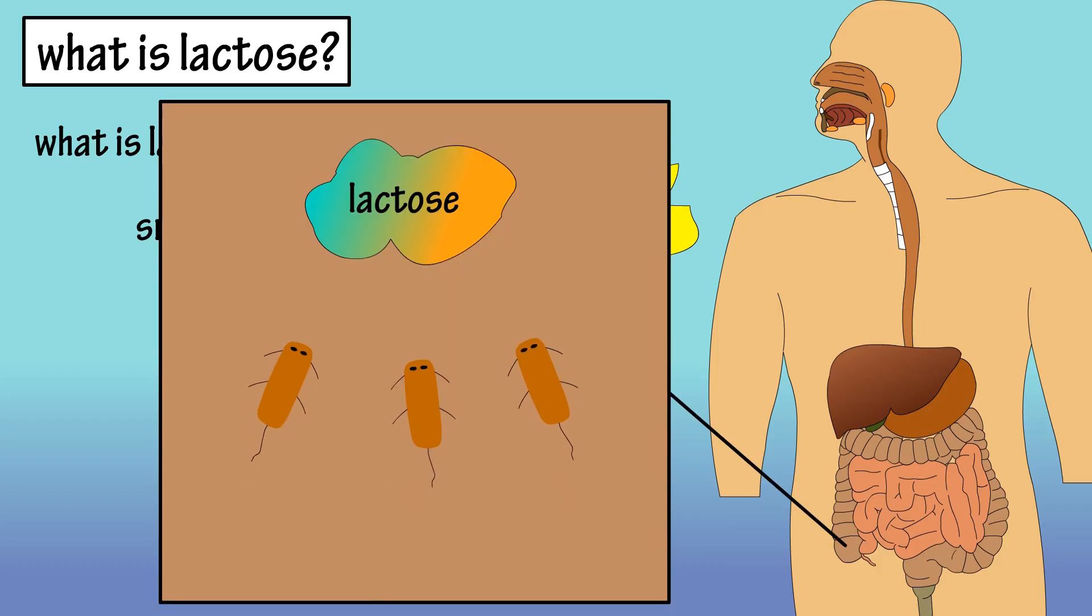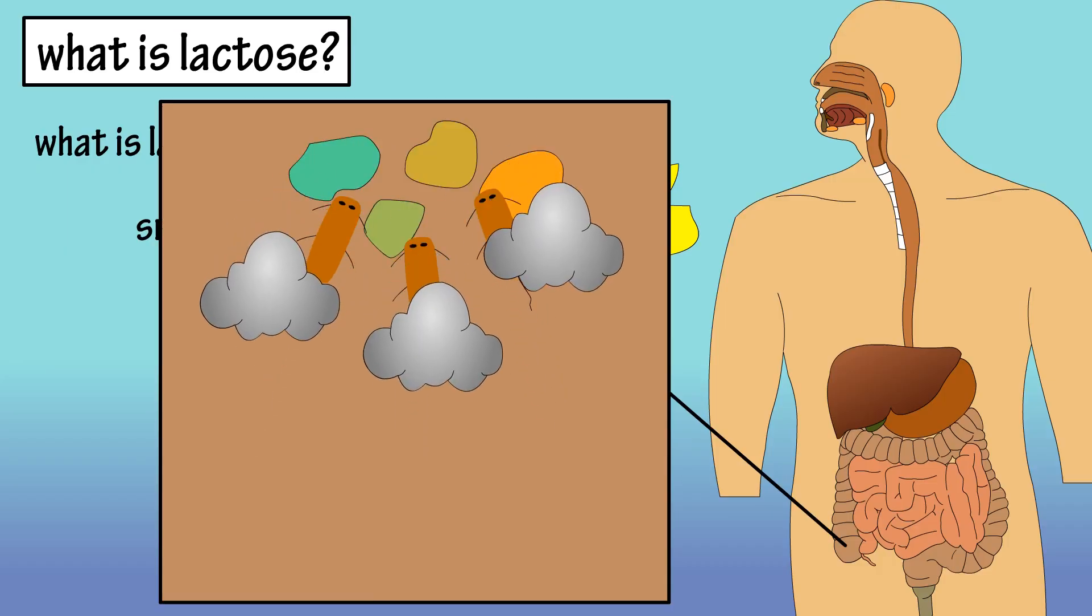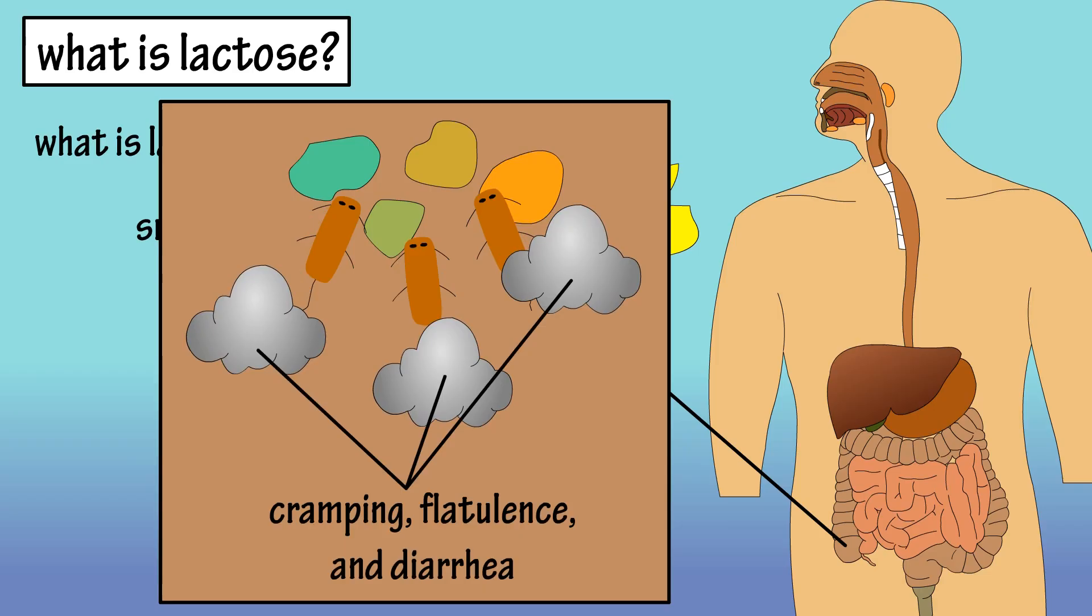In the large intestine, lactose is fermented or broken down by bacteria, which releases a lot of gas, causing cramping, flatulence, and diarrhea.